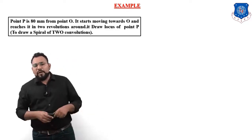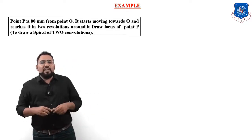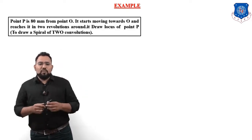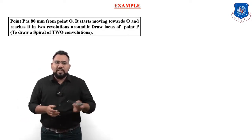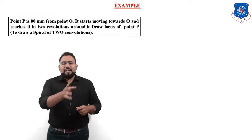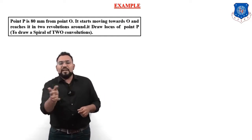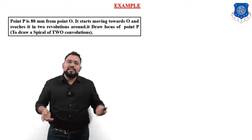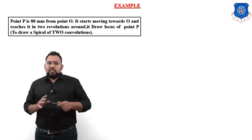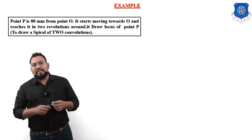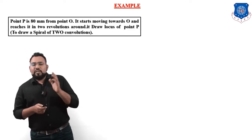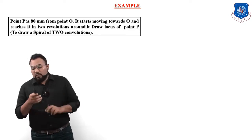So draw the locus of point P means we have to draw the Archimedean spiral. In brackets it mentions two convolutions, but you can understand that from the problem itself: it starts moving towards O and reaches it in two revolutions, meaning this is the example of two convolutions. In the last video we solved one convolution; now let us solve two convolutions.